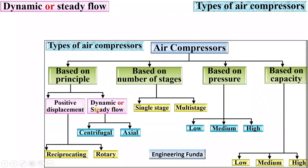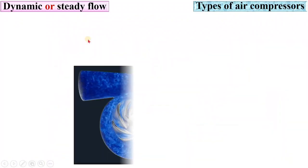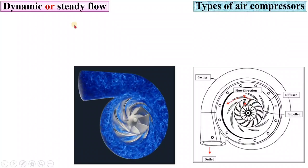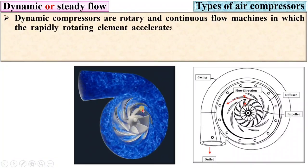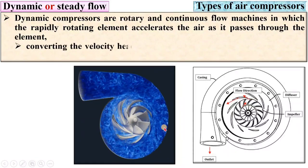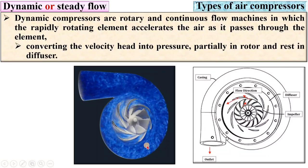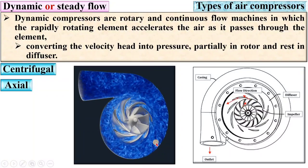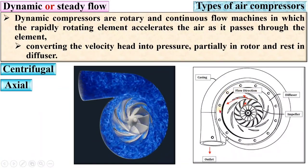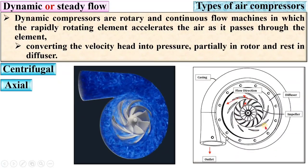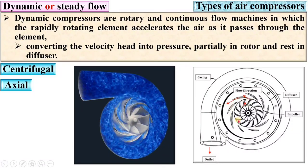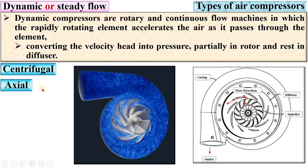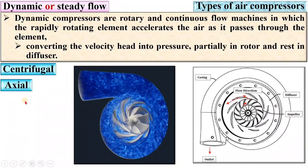Next, dynamic compressor, also known as steady flow compressor. Dynamic compressors are rotary and continuous flow machines in which the rapidly rotating element accelerates the air as it passes through, converting the velocity head into pressure — partially in the rotor and the rest in the diffuser. Pressure is increased due to the conversion of velocity energy.